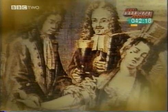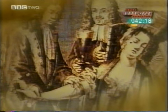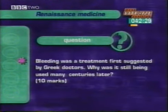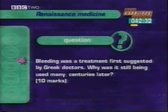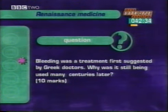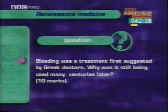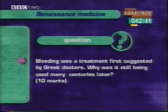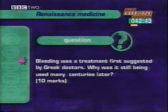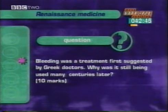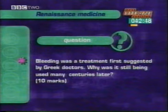Now for some exam practice. Look at this print dating from the 18th century — the very end of the Renaissance period. The picture shows a patient being treated by bleeding. Bleeding was a treatment first suggested by Greek doctors. Why was it still being used many centuries later? This type of question carries 10 marks. In the exam, you would need to write a short essay to answer this question. Here are two brief summary answers — one in grade C territory, one more likely to get an A grade.